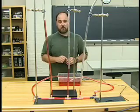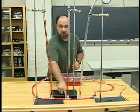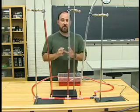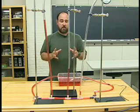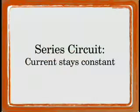I could take one of those flow rate sensors and insert it in between my two resistors, but I would still get the same amount of current. So one important thing to remember about series circuit is that current in a series circuit stays constant. It only has one path to follow.